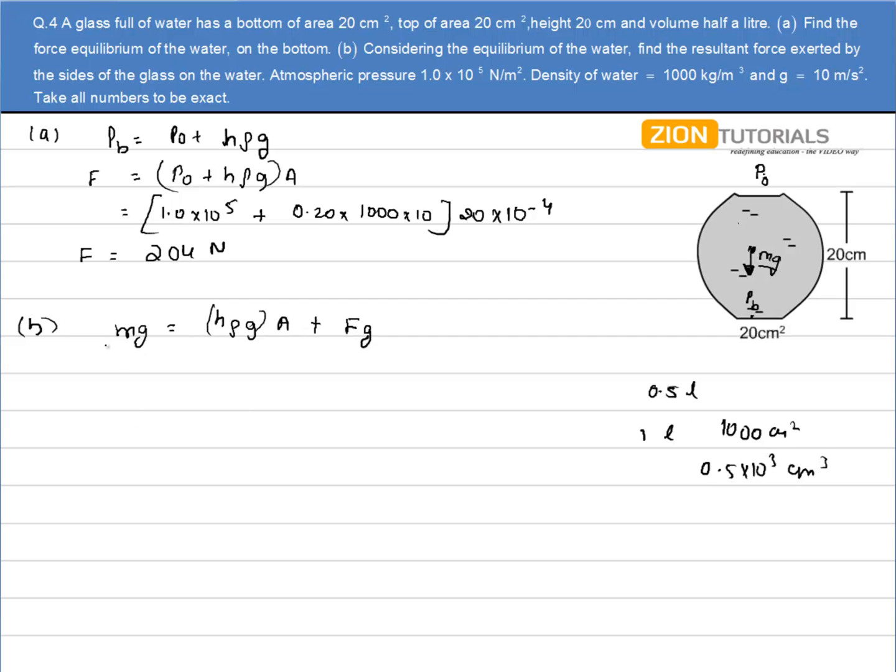So mass is volume into density, and that is equal to height, that is 0.20, into thousand, into 10, into 20 × 10⁻⁴. The volume is 0.5 × 10³ centimeter cube - convert it into meter, I have 10⁻⁶ into thousand into 10 is equal to this complete expression, that is 0.2 × 10⁴, and this 4 is cancelled, so 20 plus Fₛ.